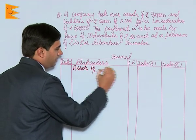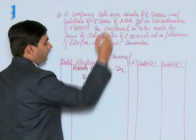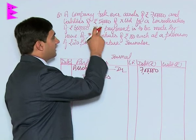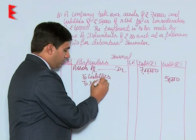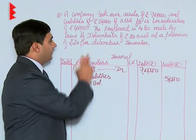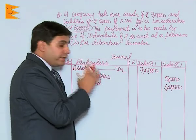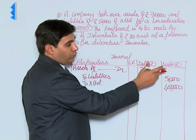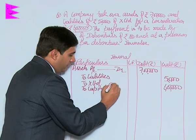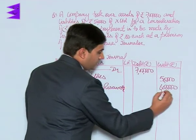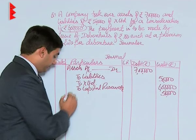Since we are taking over assets as well as liabilities, the entry would be assets account debited to liabilities. The value of assets taken over is 7 lakh and the value of liabilities taken over is 50,000. The purchase consideration is to be paid to the vendor X Limited, agreed at 6 lakhs. The credit side is short by 50,000, so we will cover this through capital reserve. The differential value of 50,000 between debit and credit should be your capital reserve.